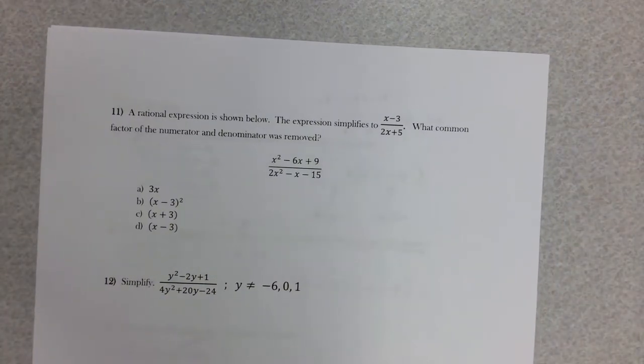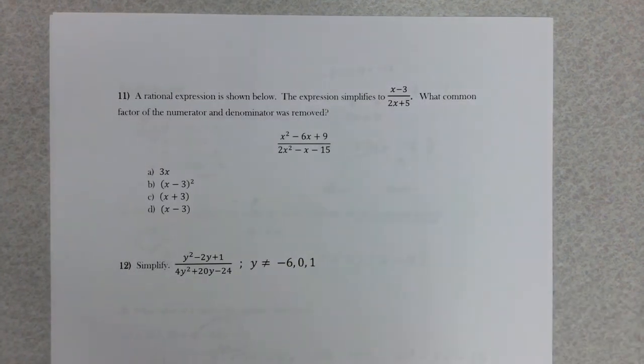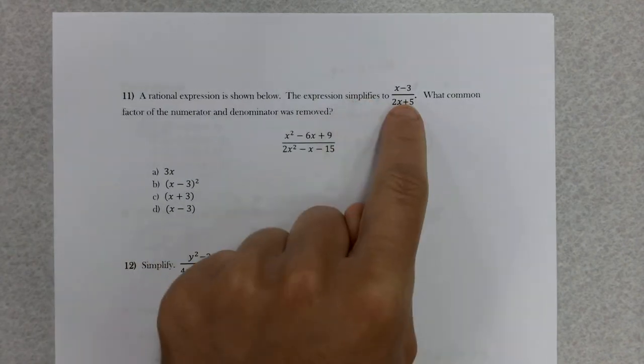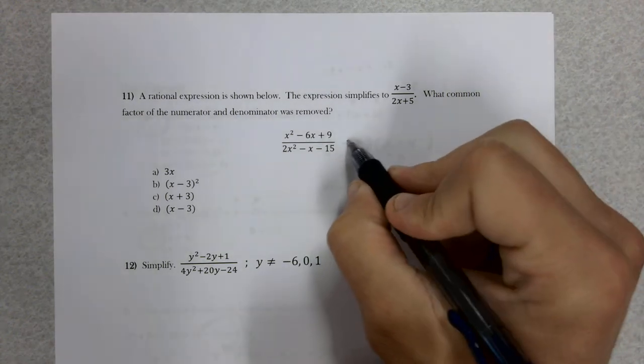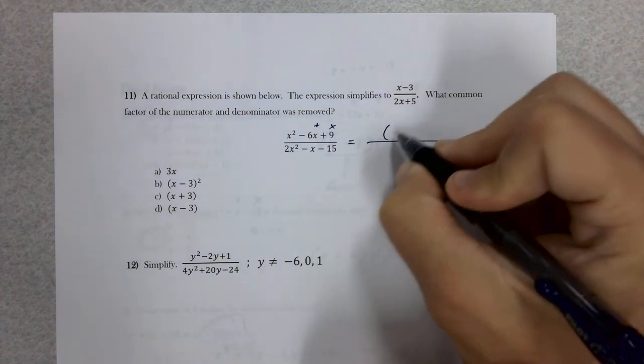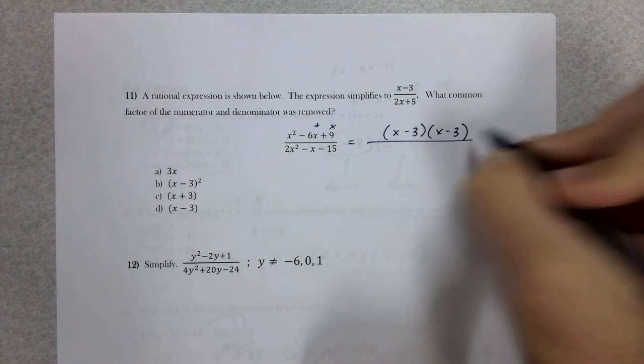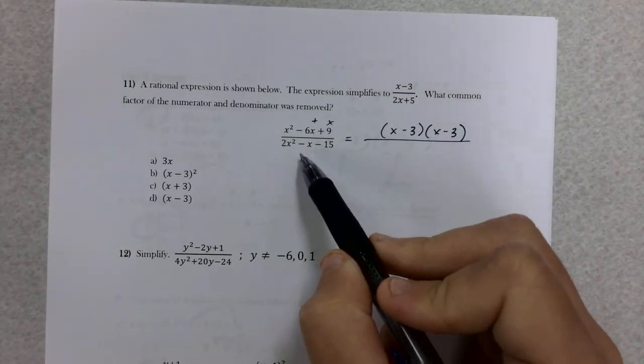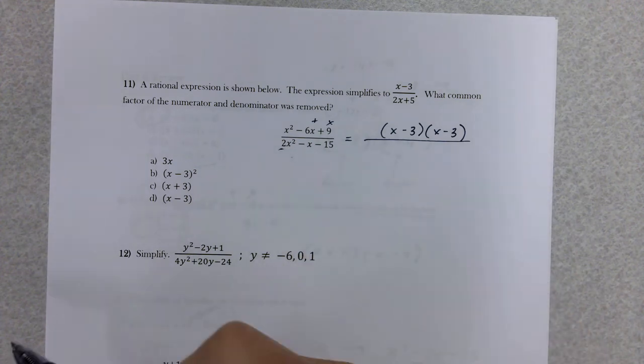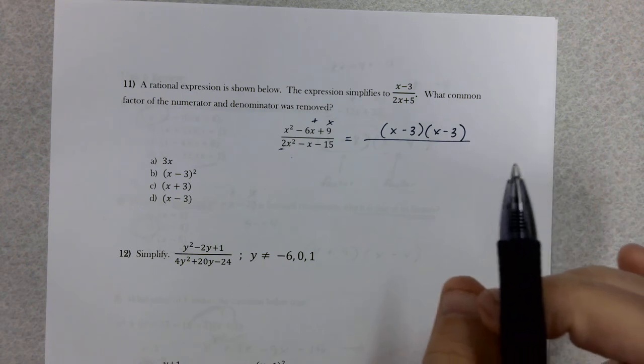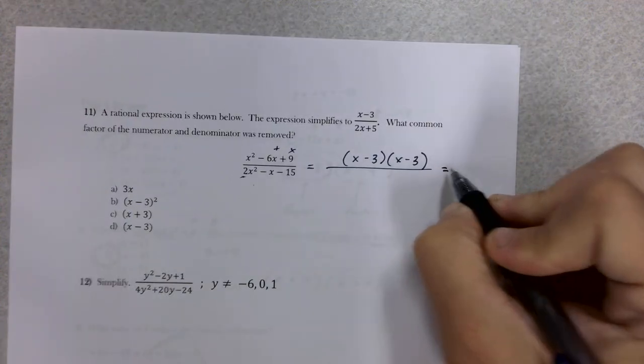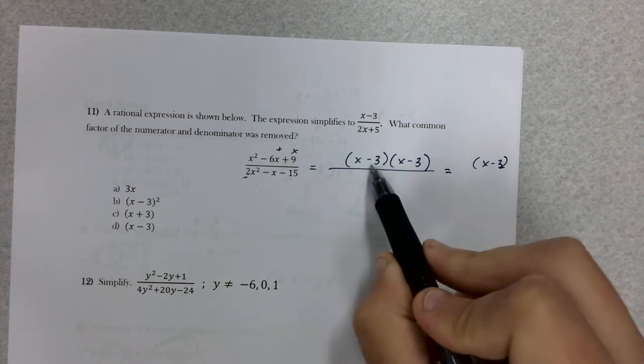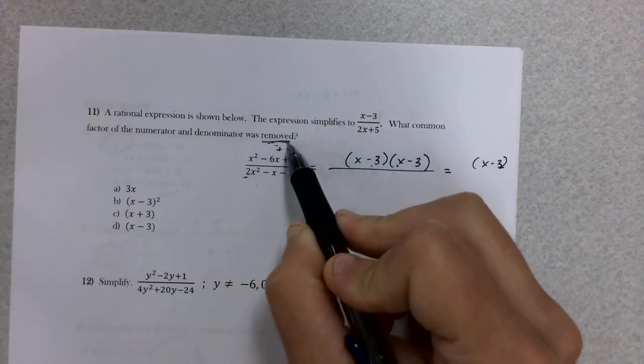Last page. Last bit of unit 6 review. Number 11 is like what we were doing. We have our expression below. The expression simplifies to this. We're kind of working backwards. I tell you what it simplifies to, I want to know what was removed. Let's start by factoring. Top is one of those trinomials again, so we got x minus 3 and x minus 3. You get to the denominator and it looks like there could be a GCF, but there isn't. It looks like it's a trinomial, but that number is bigger than a 1. Some of you might have learned how to do this, some might not. Here's the good news: it really doesn't matter.